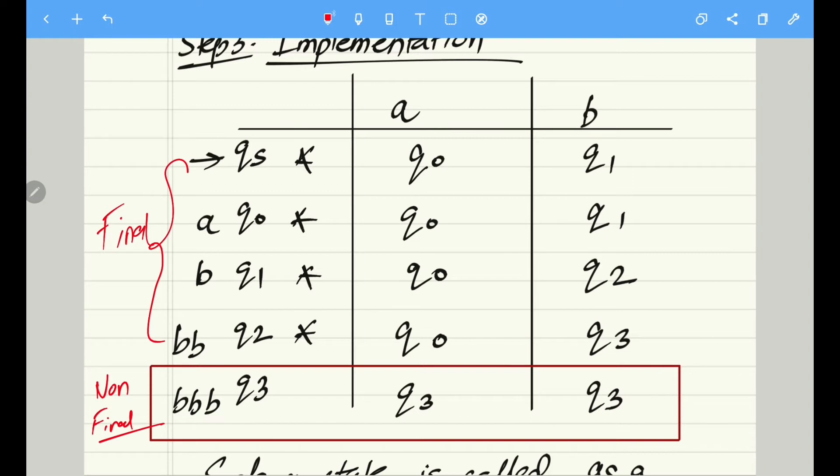So we can clearly say that this state q3 is a dead state, whereas all the above states are final states. So let's have a look at the implementation. As we all know, qs, q0, q1 are the states which comprise of all the inputs which are ending with a as well as b.